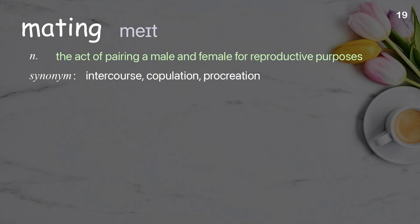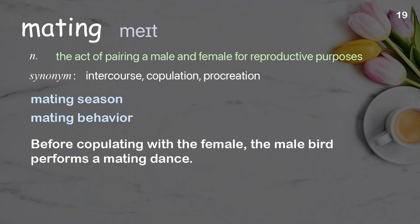Mating: the act of pairing a male and female for reproductive purposes. Examples: mating season, mating behavior. Before copulating with the female, the male bird performs a mating dance.